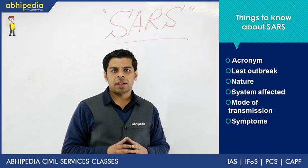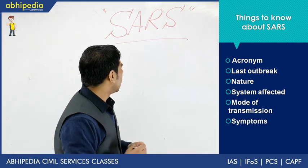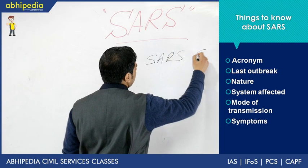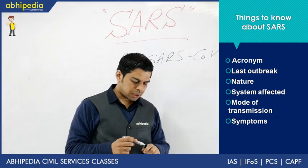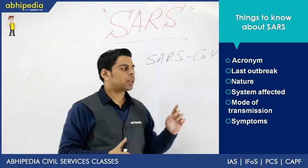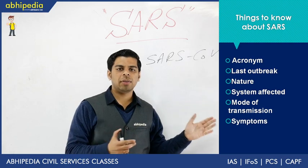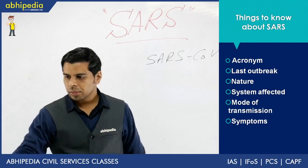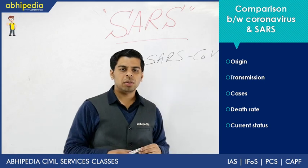If you have already seen the coronavirus lecture, you'll notice SARS is almost on the same lines. The causative agent of SARS is the SARS-associated coronavirus. The virus currently causing infection in China is caused by a novel coronavirus — 'novel' indicating a new strain that had never previously been detected in human beings.